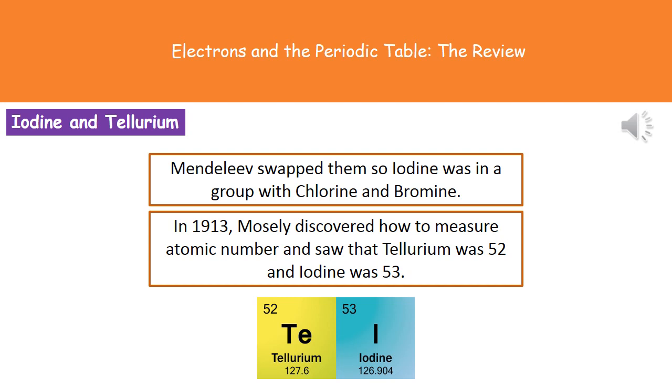So even though atomic numbers weren't measured in those days, he knew that iodine fit better with chlorine and bromine than tellurium did. So he swapped it.